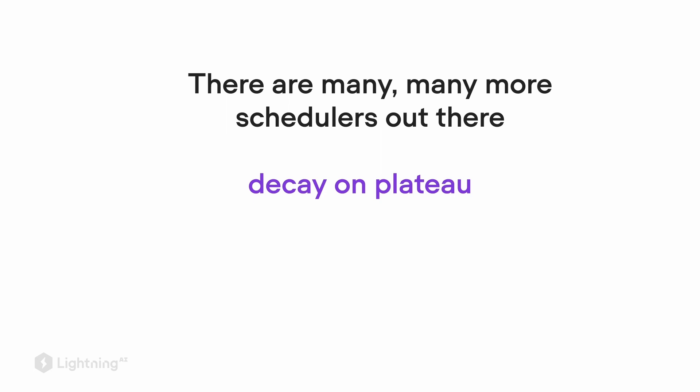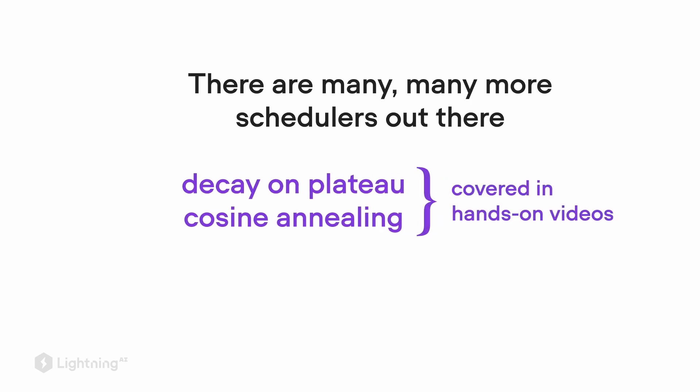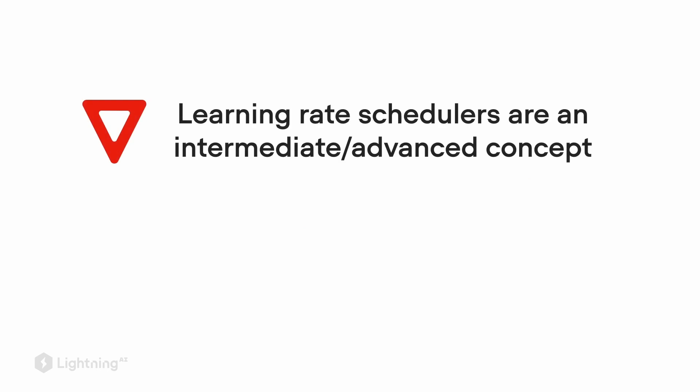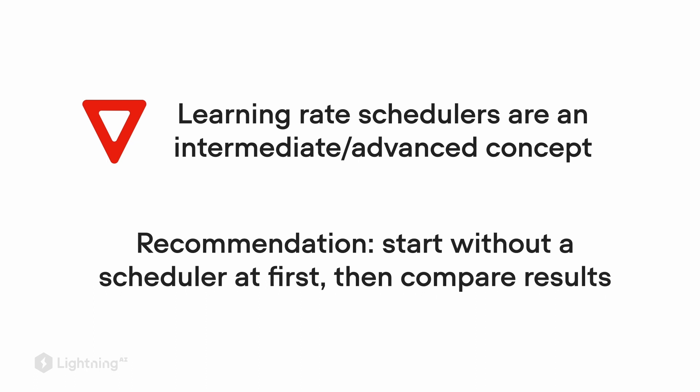In this video, we talked about the step scheduler, but there are many different types of schedulers out there. For example, another popular scheduler is the decay on plateau scheduler, where we only decay the learning rate if the learning gets stuck. Or maybe the most famous type is cosine annealing. We will see how these learning rate schedulers work in the following coding videos. Before we get there, I want to highlight again that learning rate schedulers are an intermediate or advanced concept. My strong recommendation is to start without a scheduler first, and then compare the results without and with a scheduler to see if it actually helps or makes performance worse.